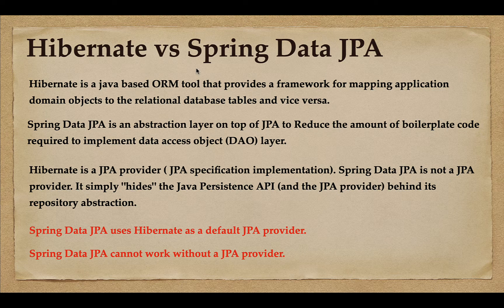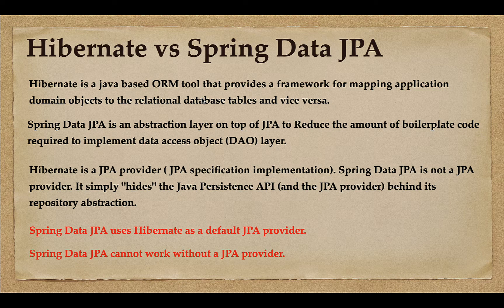To summarize: Hibernate is a Java-based ORM tool that provides a framework for mapping application domain model objects to relational database tables and vice versa. If we use Hibernate, we don't have to write SQL statements for CRUD operations like insert, select, delete, and update. Hibernate generates SQL statements behind the scenes and uses JDBC to communicate with the database, allowing us to directly persist objects into relational database tables.